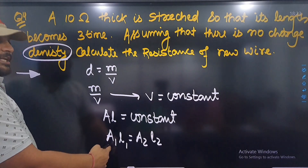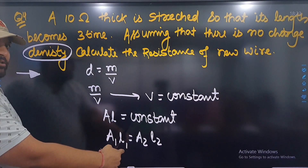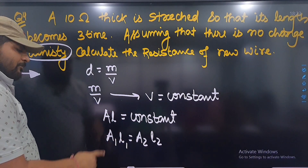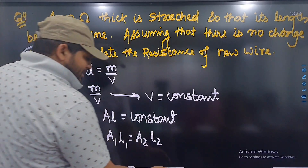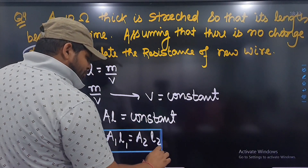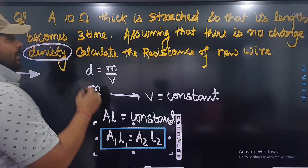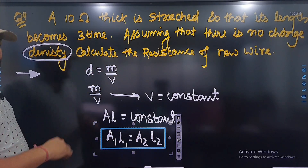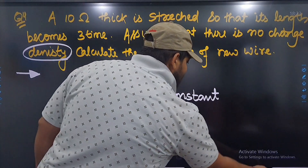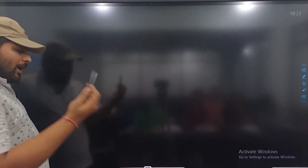A1 × L1 must be equal to A2 × L2 — initial area into initial length must be equal to final area into final length। Initial area को A मानते हैं, initial length L है। यहीं से यह बात पता चली — density constant है इसीलिए यह relation use होता है।